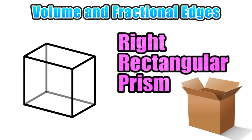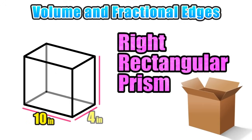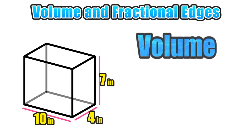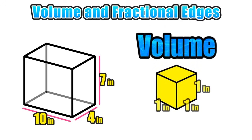The volume of a rectangular prism is going to be dependent on its dimensions — in other words, its length, its width, and its height. For example, let's consider a rectangular prism with a length of 10 inches, a width of 4 inches, and a height of 7 inches. We should have a basic understanding that the volume of a figure is a measure of the amount of space inside of that figure, or how much it can hold inside.